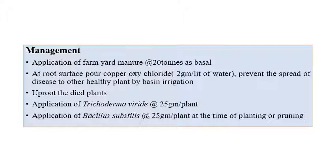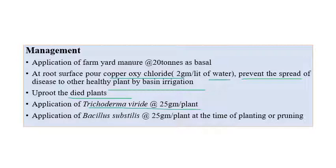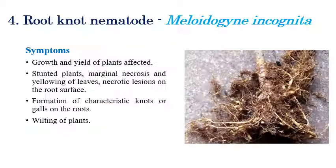Coming to management aspects, application of farmyard manure at the rate of 20 tonnes per hectare as a basal application is recommended. Along with root surface pouring of copper oxychloride at 2 grams per liter of water to prevent spread of the disease to healthy plants by basin irrigation. Uprooting the dried plants, application of Trichoderma viride fungal biocontrol agent and Bacillus subtilis bacterial biocontrol agent at the rate of 25 grams per plant at the time of planting and pruning are also recommended.